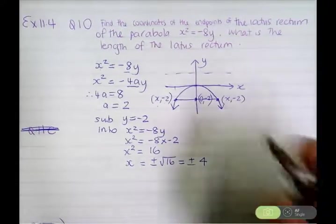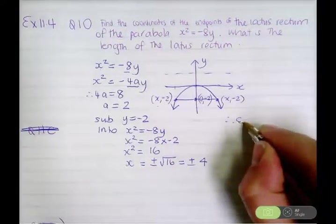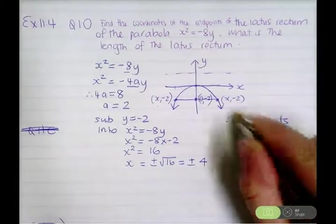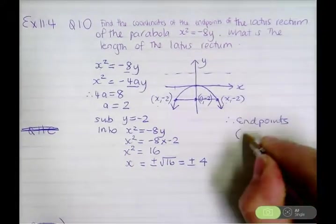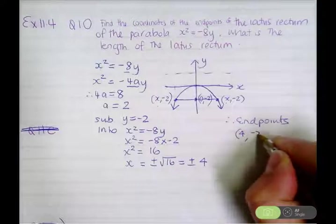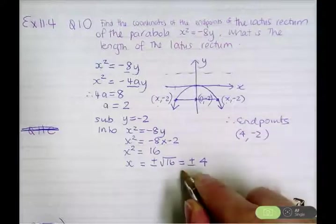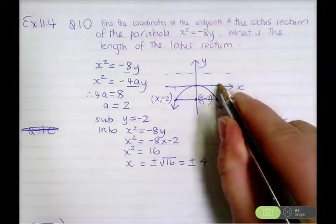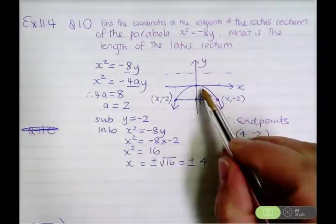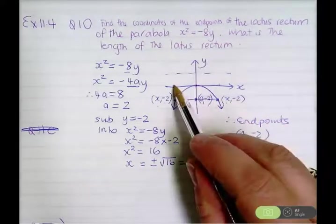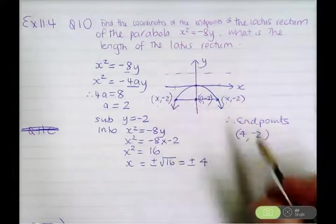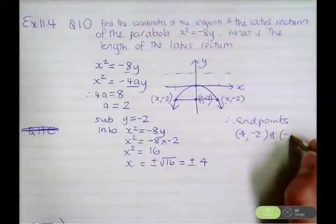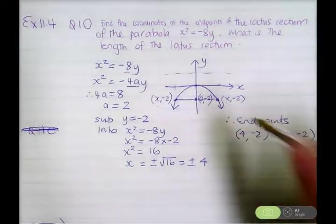x is plus or minus 4. So therefore the endpoints of the latus rectum are (4, negative 2) and (negative 4, negative 2), because x can be 4 or negative 4. The point (4, negative 2) is 4 across and 2 units down.